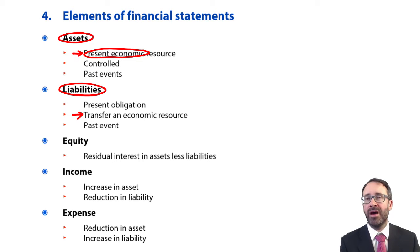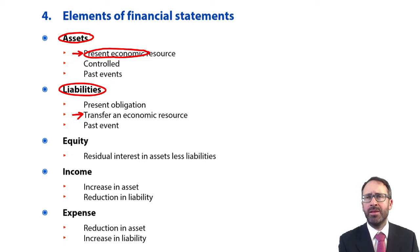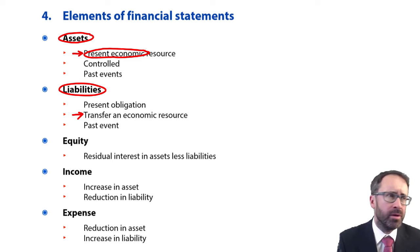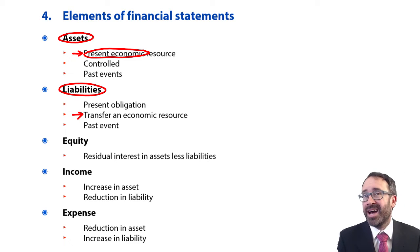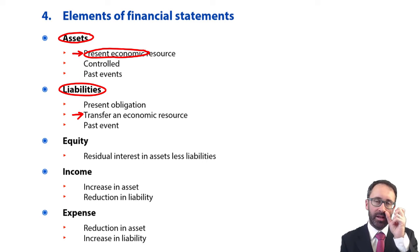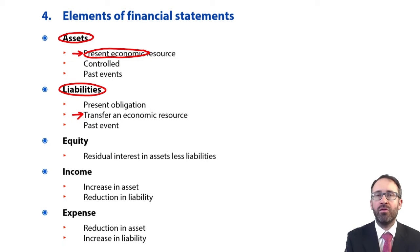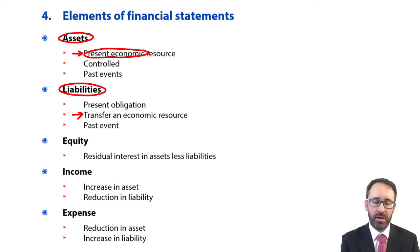'Controlled' means you can direct how that asset is utilised or prevent others from using it. 'Past event' means something has happened — an exchange, a contract, or a verbal agreement that means you can now meet the definition of an asset. Your assets — property, plant, equipment, investments, inventories, receivables, cash — all apply to that scenario. Within the financial reporting syllabus, it's more about the application of that definition in multiple choice questions than rote learning of it.